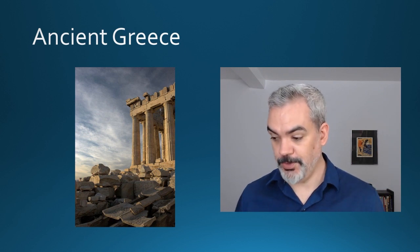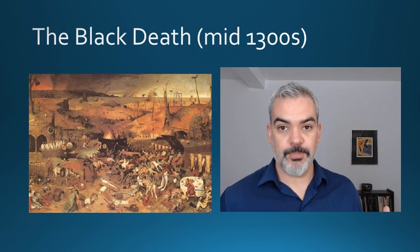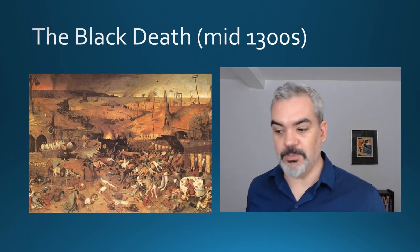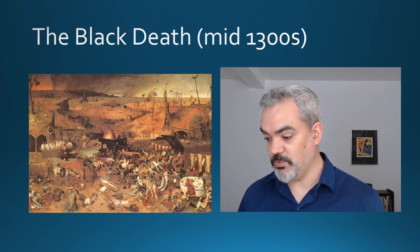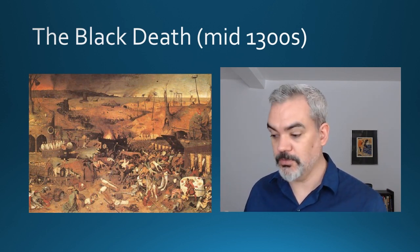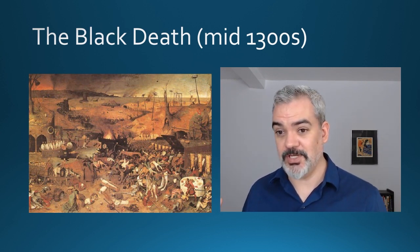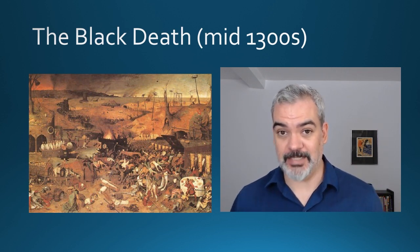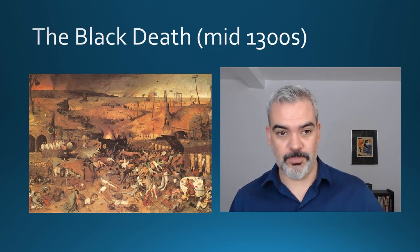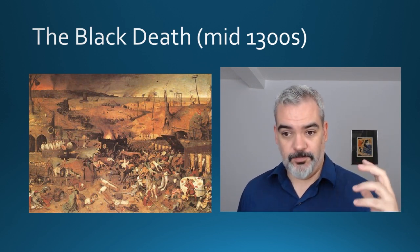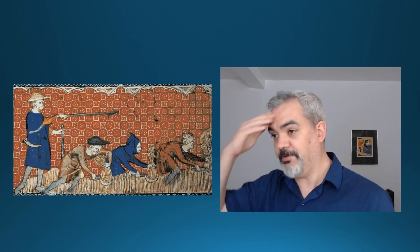Another part of the standard story is that the Renaissance was in some sense precipitated by the Black Death — one of the worst, if not the worst, plagues humans have ever faced. It swept through Asia, Europe, and parts of Africa in the mid-1300s. Somewhere between 30 and 60% of the entire population of Europe died. Losing half your population really makes you think — it makes you reflect on your place in the world.